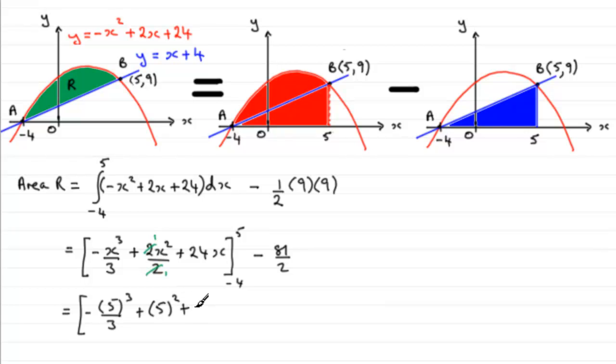And then plus 24 multiplied by 5. And then we subtract what we get when we put the minus 4 through. So we've got that minus, and then minus 4 cubed over 3, plus the x squared, plus minus 4 squared, and then plus 24 times minus 4. So that essentially gives us this red area.